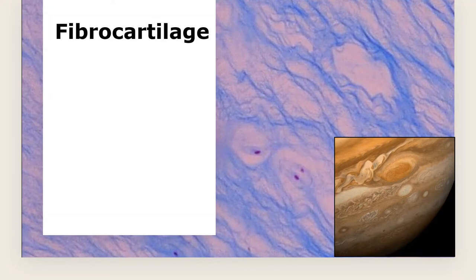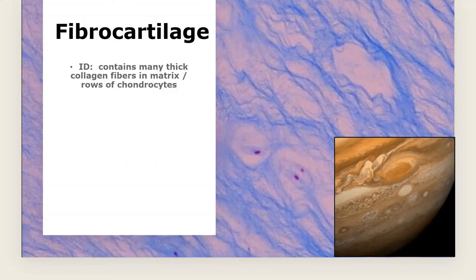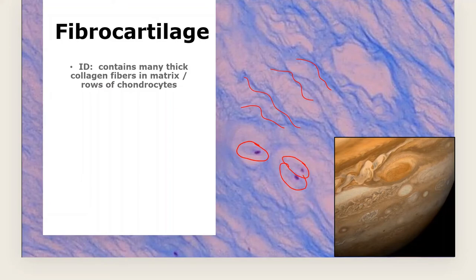Fibrocartilage is tricky — there are many different-looking pictures of it, and on exams it was the most missed type of tissue. There are many collagen fibers in the matrix and rows of chondrocytes. You can see chondrocytes in lacunae here, but most of what you see is wispy cloud or smoke-looking collagen fibers. It doesn't look like the big fat pink collagen ropes seen elsewhere — it's the wispiness that's the giveaway.